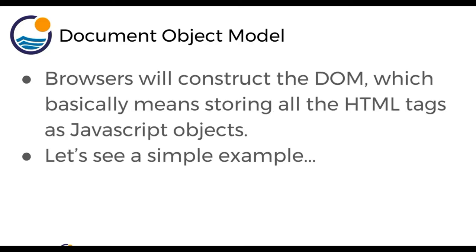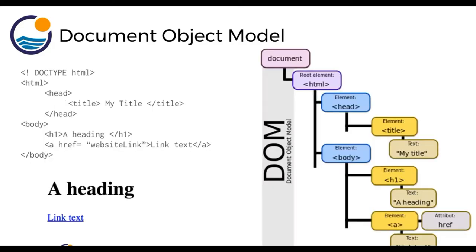Browsers will construct the document object model, which basically means storing all the HTML tags as JavaScript objects. For example, imagine some basic HTML with a head, a title, and in the body a heading one and an anchor tag. When uploaded in the browser, the browser creates this document object model. We can see it looks like a JavaScript object with the root element: HTML, head, title, text. And we can grab things from this document object model using JavaScript.